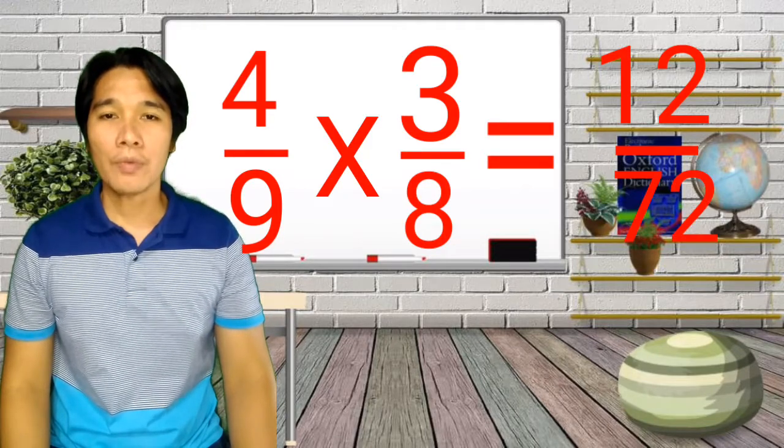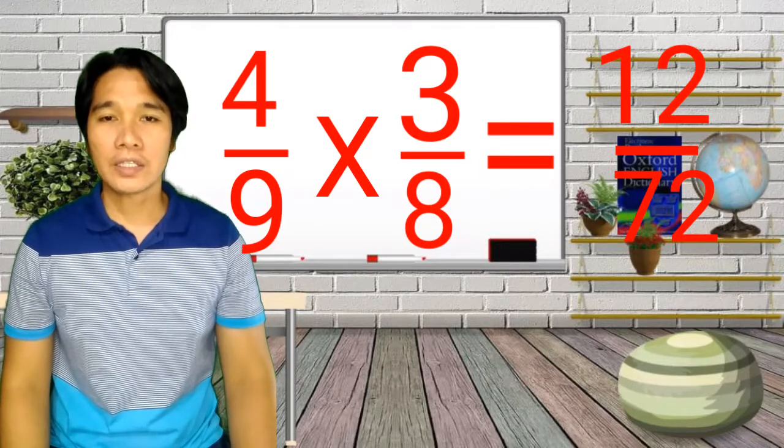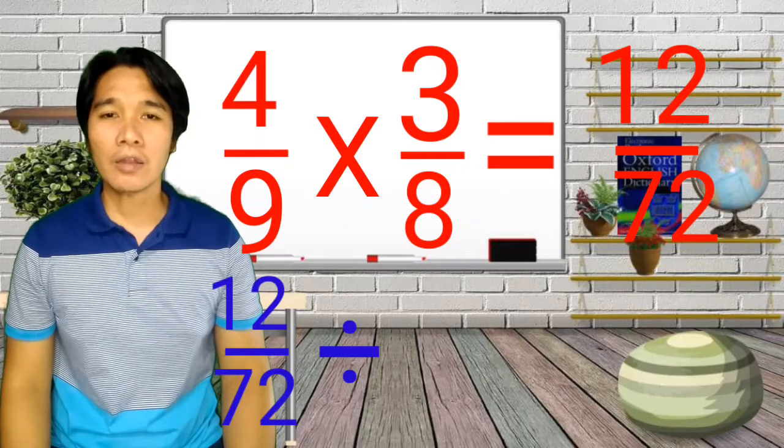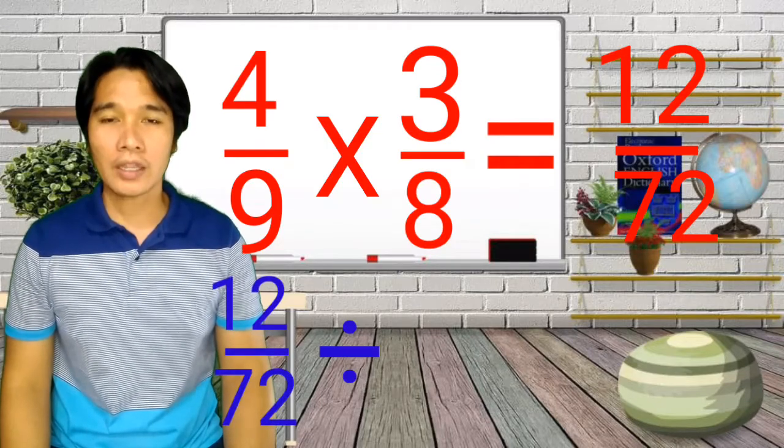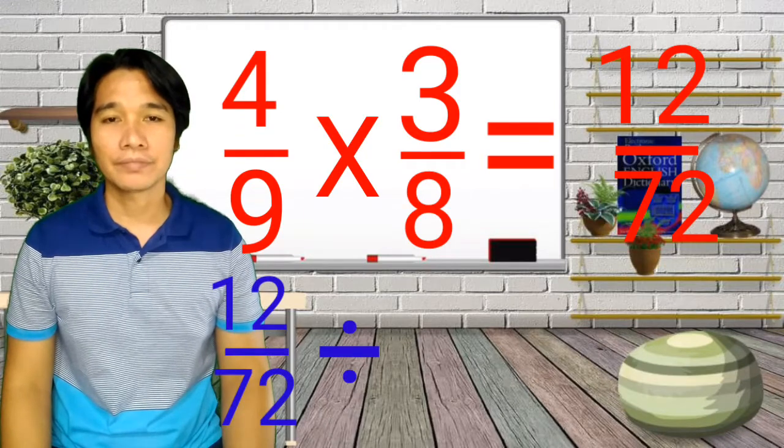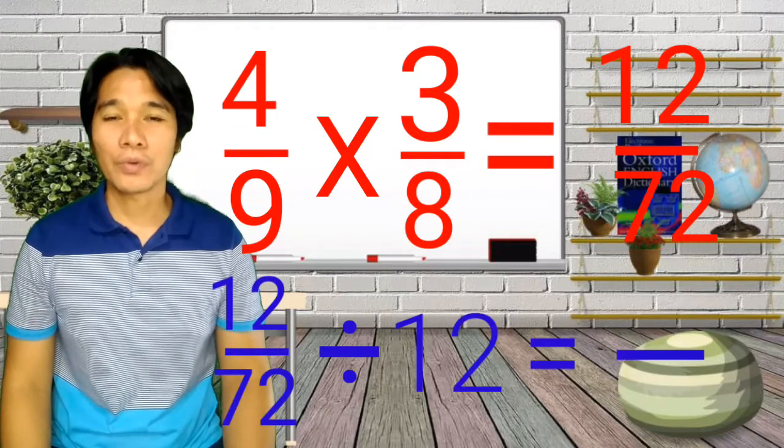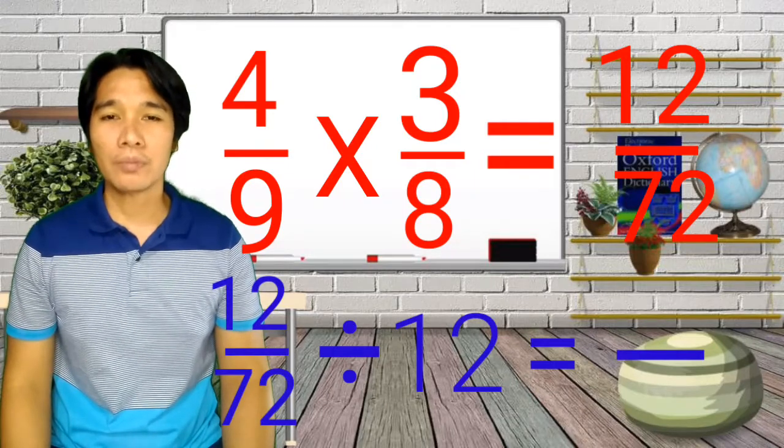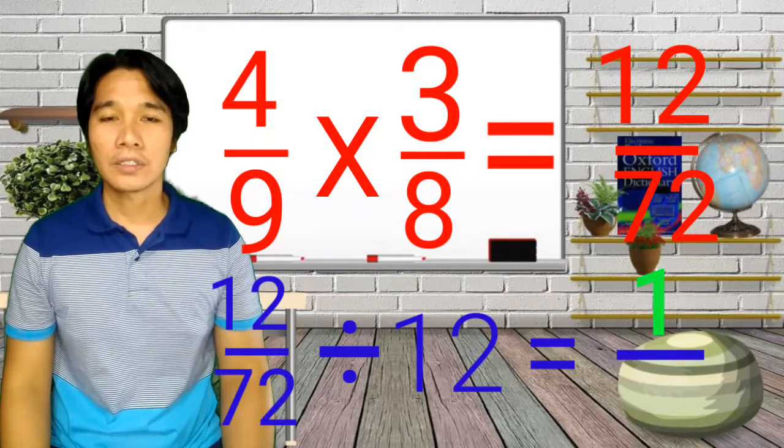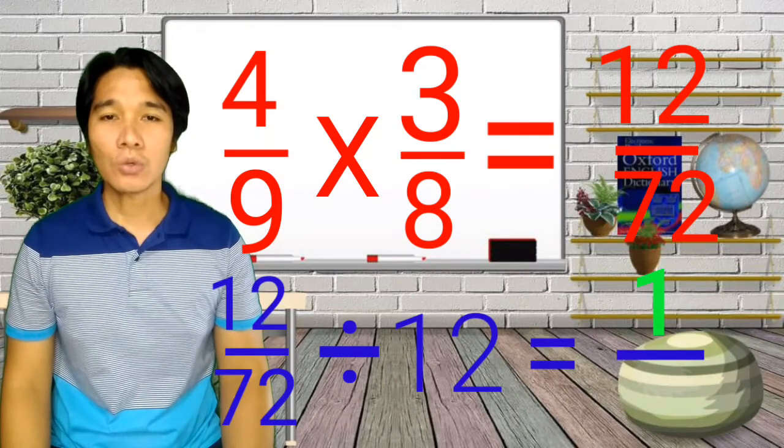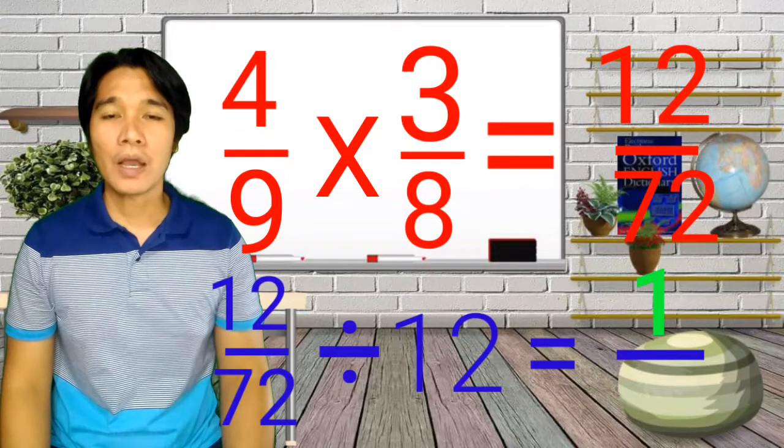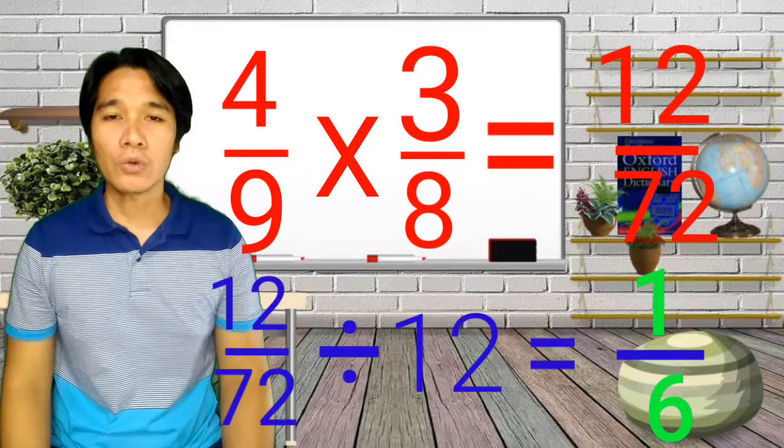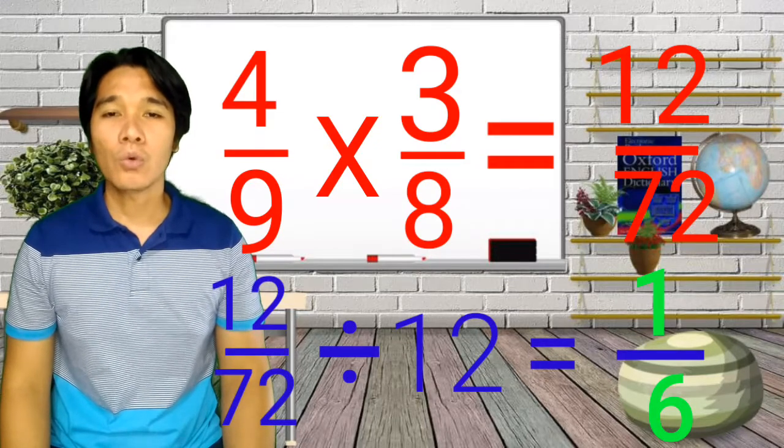So, we have 12 over 72. Now, can you think a number that can be divided in both numerator and denominator? 12, correct! So, let us divide 12 divided by 12. So, we have 1. And then, 72 divided by 12, we have 6. So, therefore, 12 over 72 is equivalent to 1 sixth.